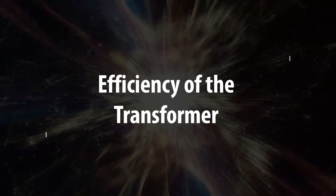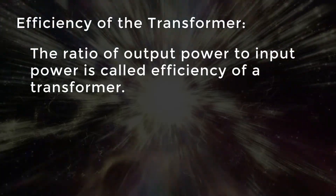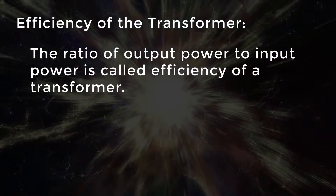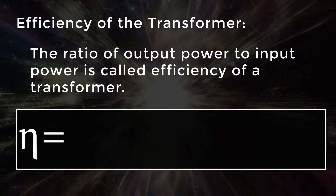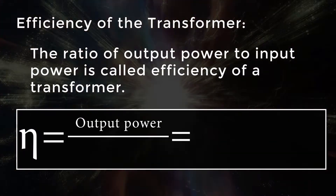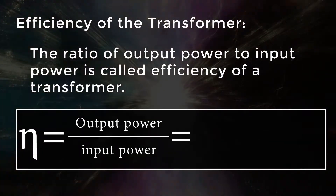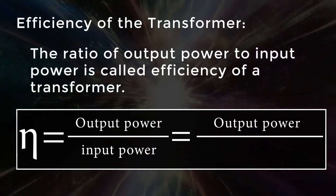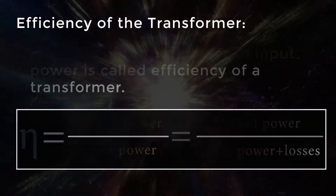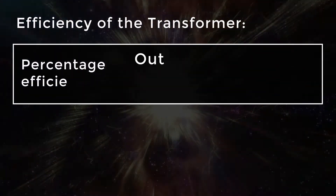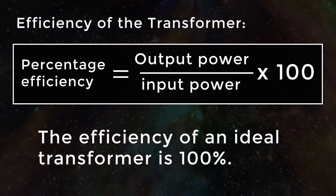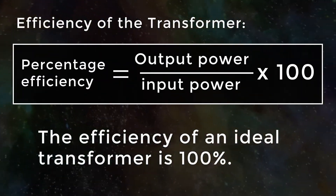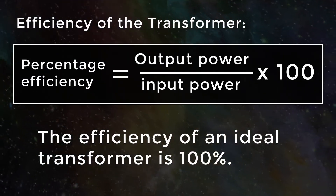Efficiency of the transformer: the ratio of output power to input power is called the efficiency of a transformer. Efficiency (η) = output power divided by input power = output power divided by (output power plus losses). Percentage efficiency is equal to η multiplied by 100. So the efficiency of an ideal transformer is 100 percent.